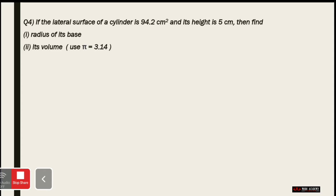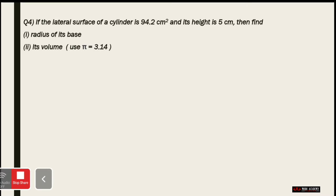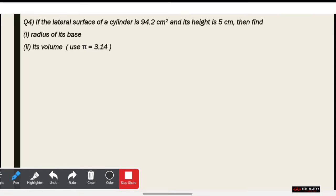Question number 4 is very easy, but everyone finds it difficult. The lateral surface area of the cylinder is 94.2 cm², and height is equal to 5. The first part asks us to find the radius. So, the lateral surface area means that 2πrh equals what?